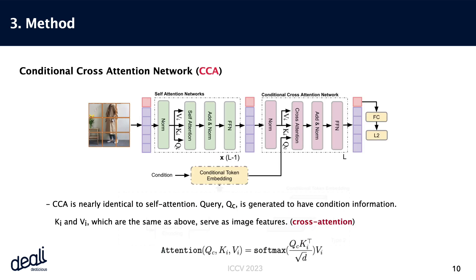Let's take a closer look at the conditional cross-attention network. In CCA, we introduce a unique query known as QC, which is designed to capture condition-specific information. Meanwhile, the key and value components remain consistent with their roles as image features.